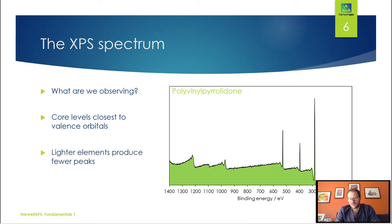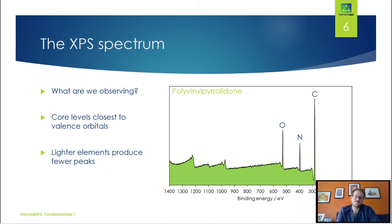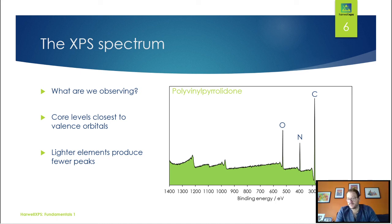When we have lighter elements — we saw with gold we've got a lot of peaks because it's quite a heavy element with many shells and subshells — but when we come to lighter elements, because we don't have quite so many core levels, we don't have so many peaks. In this example we have carbon, oxygen, and nitrogen, and we've only actually got one peak for each one. Our main sharp peaks here — one for carbon, one for nitrogen, one for oxygen — because we only have one core level: our 1s core level. The rest of the electrons in our system are valence electrons.